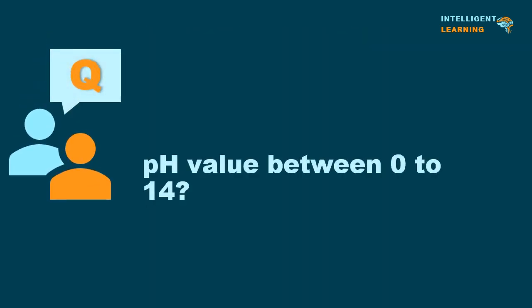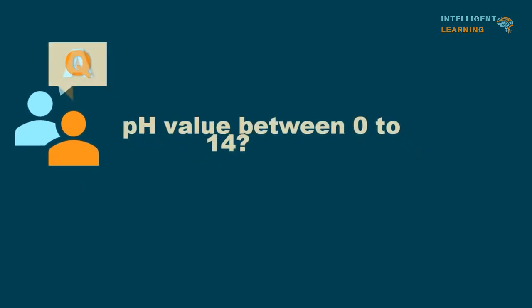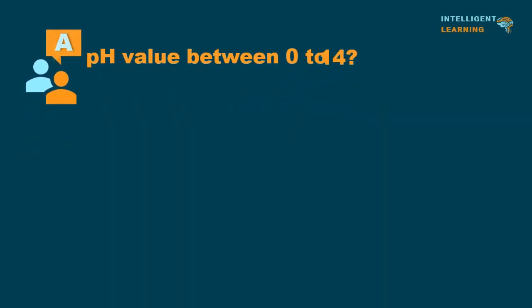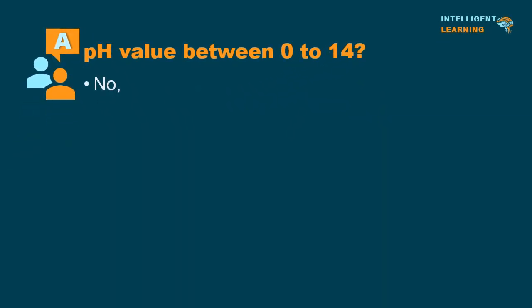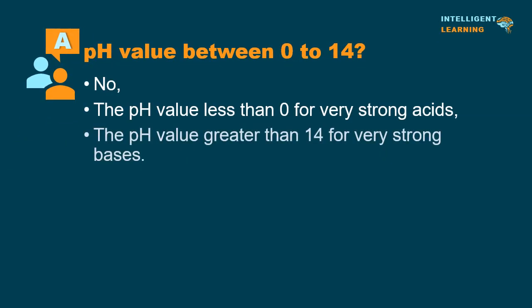Is the pH value always between 0 to 14? No, the pH value can be less than 0 for very strong acids, or greater than 14 for very strong bases.